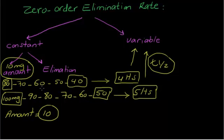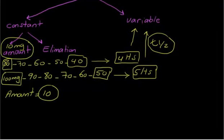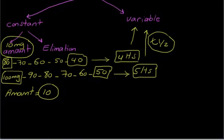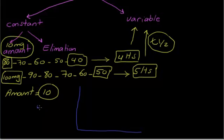To summarize: one thing is fixed, which is the amount eliminated (constant), while the T half-life is variable. Now, how can we understand elimination rate? The elimination rate is also constant in zero order kinetics. Let me explain using a curve where the Y-axis is the units of drug or concentration, and the X-axis is time.